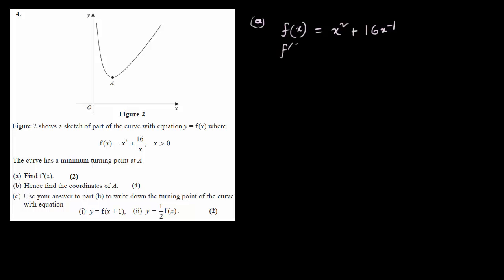f'(x) is the derivative. When we differentiate x squared, the 2 comes to the front and this becomes x. Then for the 16x⁻¹ term, the coefficient 16 stays, we bring down the minus 1, and reduce the power by 1 to give minus 2. So f'(x) turns out to be 2x minus 16/x².